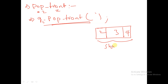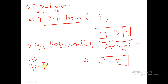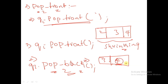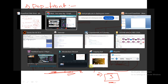Here the queue is automatically shrinking. If I again use pop_front, q1.pop_front, then my updated queue will be equal to 3, 4. Similarly, I also have pop_back. This function will remove the last element from the back. In this case it will remove 4, so the resultant will be only 3. These are some built-in functions in our queue.